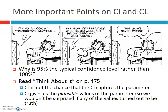Why is it 95% instead of 100%? If we were 100% sure, we'd say the proportion of people who own cell phones is somewhere between 0% and 100% — that doesn't really help us. We want to be sure without being overly sure and including way too many values, because then why would you even bother doing the math? Page 475 of your textbook has good thoughts on this, including the fact that the confidence level is not the chance that the interval captures the parameter — I said that before and I'll say it again. The confidence interval gives us plausible values; we wouldn't be surprised if any of those values turned out to be the truth.